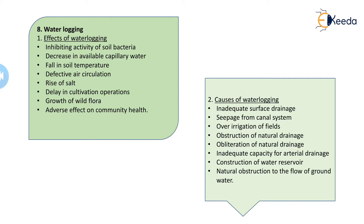Let's study the effects of waterlogging. First, it inhibits the activity of soil bacteria. As we had studied in the first chapter of Water Resource Engineering, once we provide artificial irrigation supply but the groundwater level is too close to the ground surface, waterlogging will form in that region. Because of the continuous accumulation and ponding of water, bacteria develop and breeding of mosquitoes is produced.